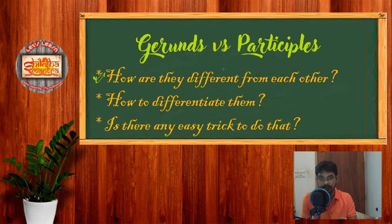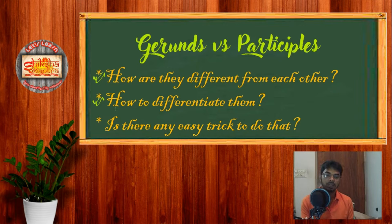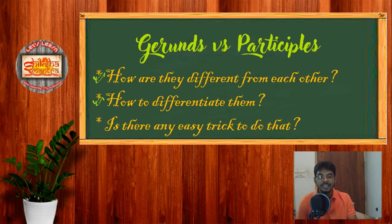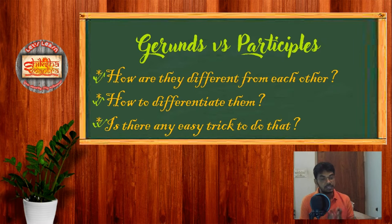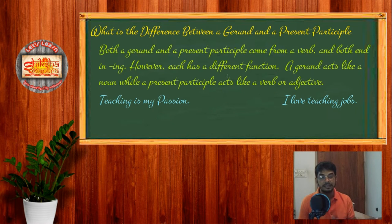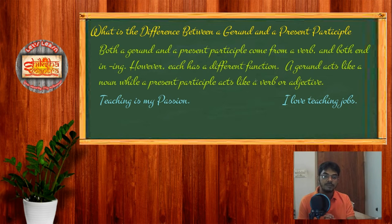The second question is: how to differentiate them? Is there any clue with which we can differentiate gerunds from participles? The answer is obviously yes. And the third thing we'd try to find out is whether there's any easy trick to differentiate between gerunds and participles. It's our important duty to learn the difference between gerund and present participle.